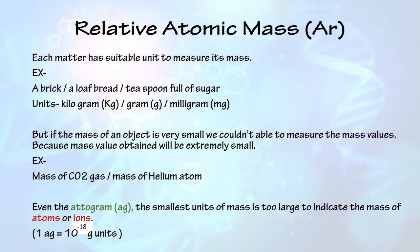Relative atomic mass, symbol Ar — relative atomic mass is a quantification of an element or compound, mostly used in chemistry. In our daily life, to measure or quantify some objects we use several units. For example, to measure weight we use kilograms, grams, and milligrams. But if the mass of an object is very small, the value obtained will be extremely small. All elements, molecules, and compounds have very extremely small mass.